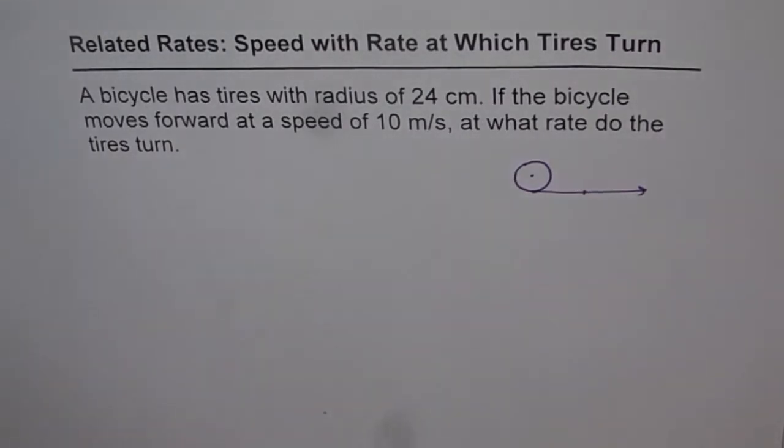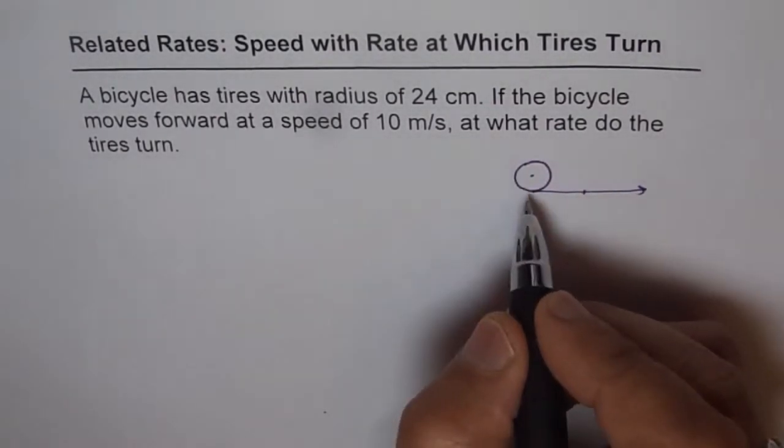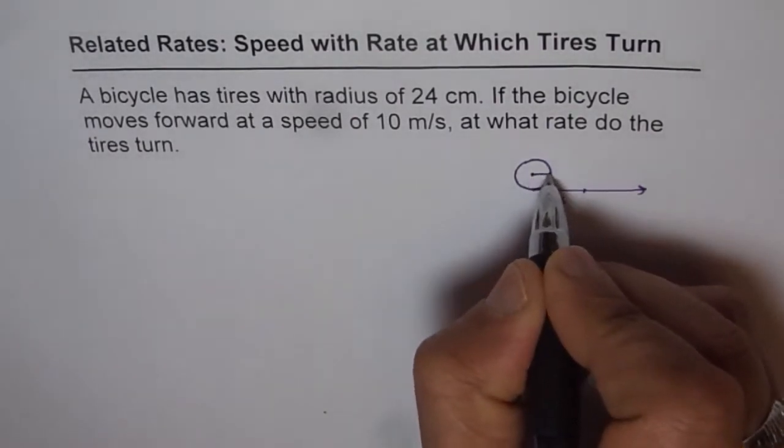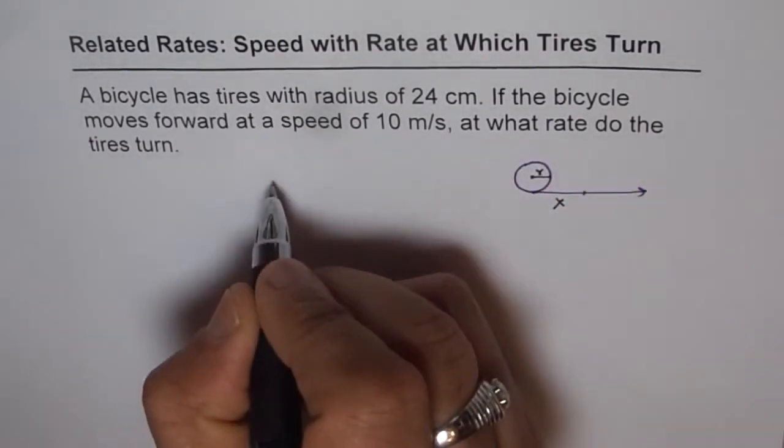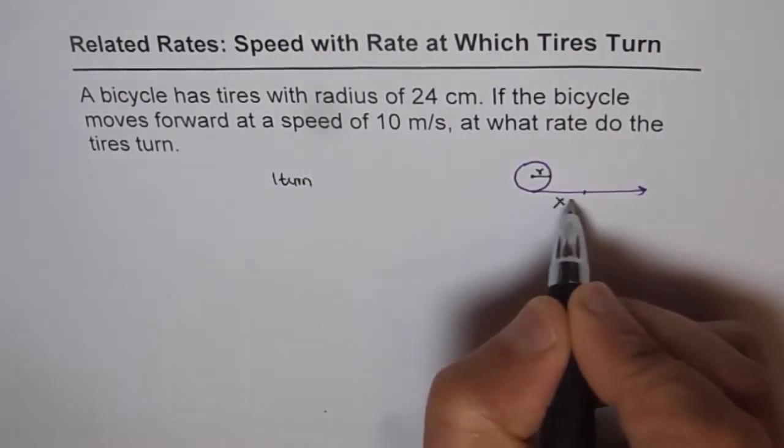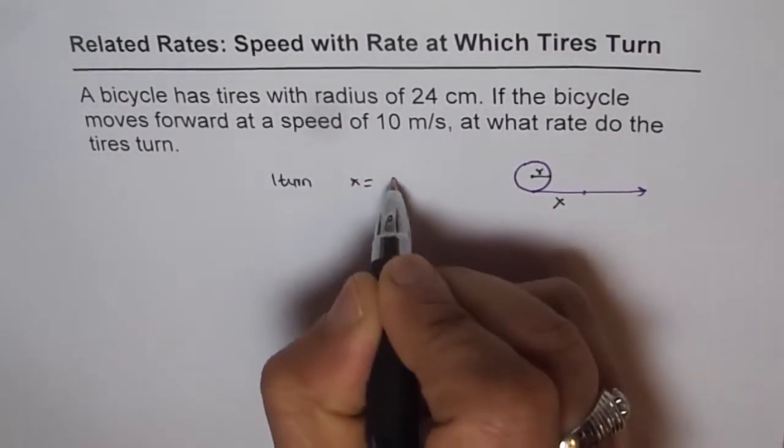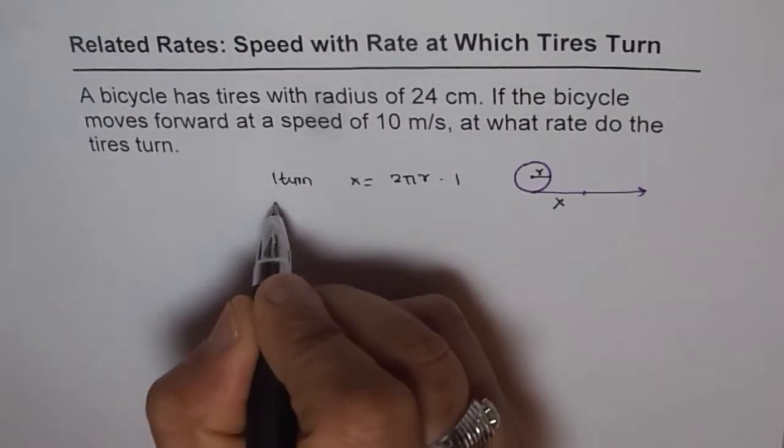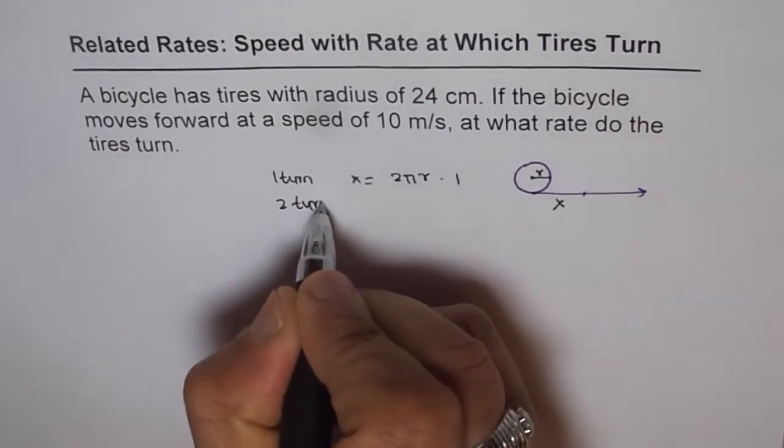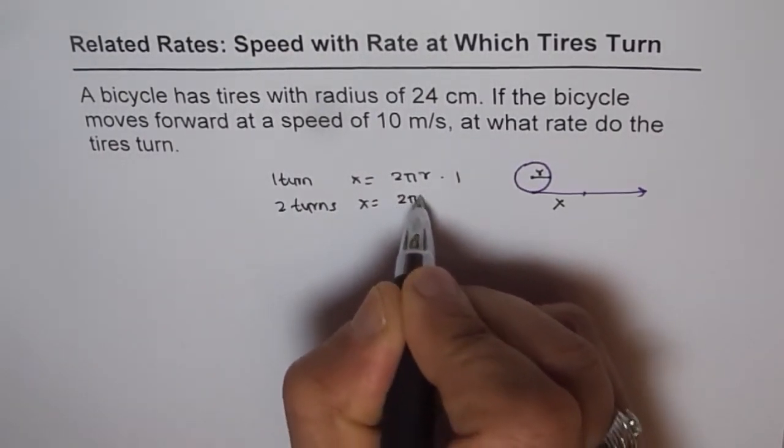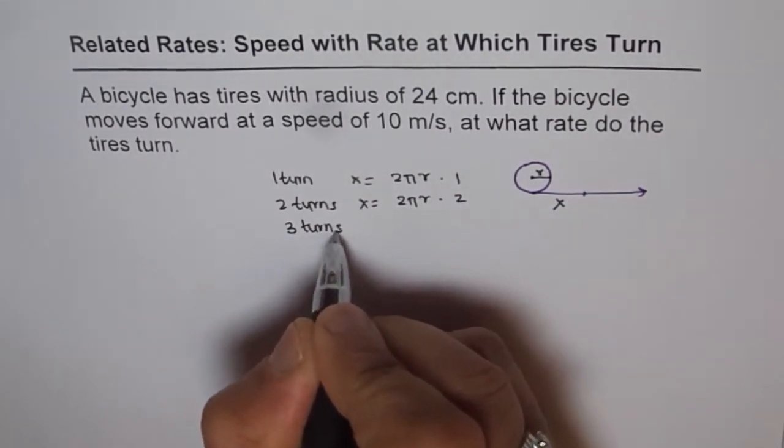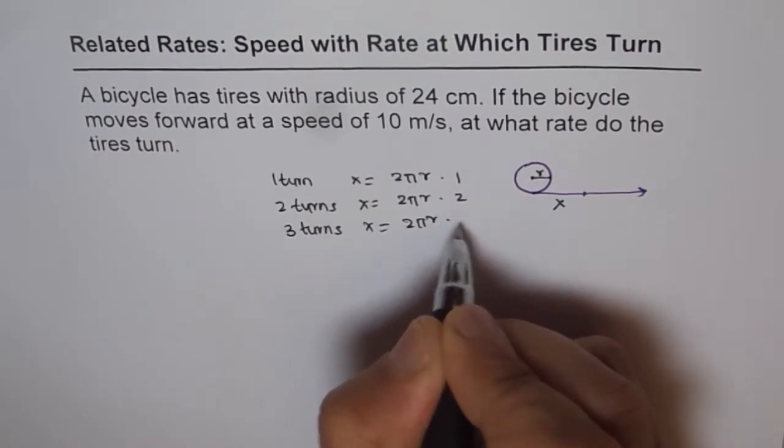These two quantities are related. For every turn, if it is making one turn and the distance moved is x with radius r, then with one turn x will equal 2πr times 1. For two turns, x will equal 2πr times 2. For three turns, x will equal 2πr times 3.